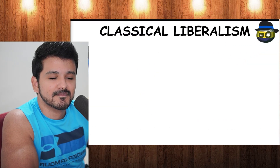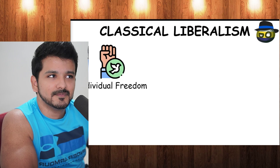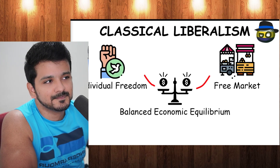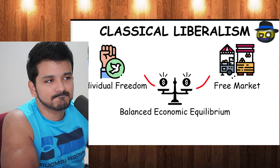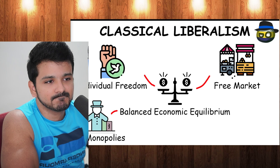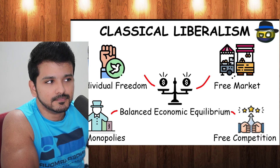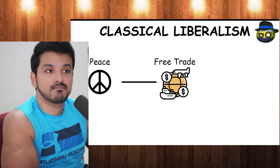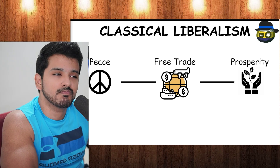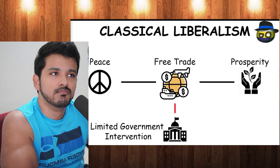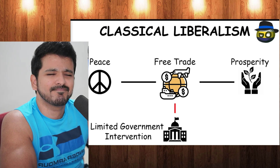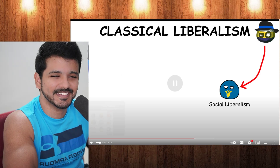Libertarianism thinks that individual freedom and a free market create a balanced economic equilibrium, as long as monopolies aren't allowed to develop and destroy competitiveness. It sees free trade as a path to universal peace and prosperity, and it likes as little government intervention as possible, compared to social liberalism.